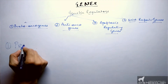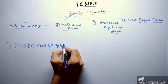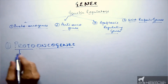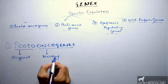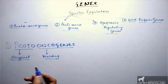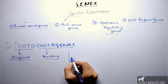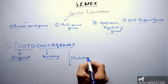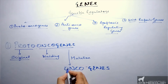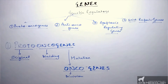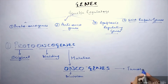The first type is proto-oncogenes. As the name suggests, 'proto' means original and 'onco' means dividing. So these are the originally dividing genes, which are physiologically functional and cause cell division at a normal rate within normal limits. When affected by mutation, these proto-oncogenes are converted into oncogenes, which cause uncontrolled, rapid, and not required division, leading to tumor formation.